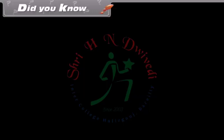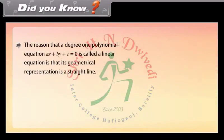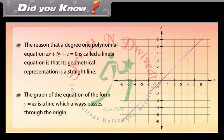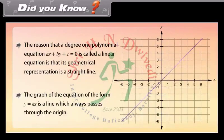Did you know? The reason that the degree 1 polynomial equation AX plus BY plus C is equal to 0 is called a linear equation is that its geometrical representation is a straight line. The graph of the equation of the form Y is equal to KX is a line which always passes through the origin.